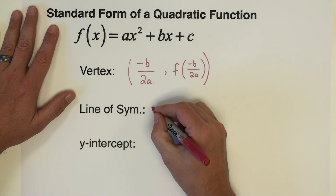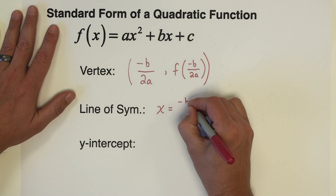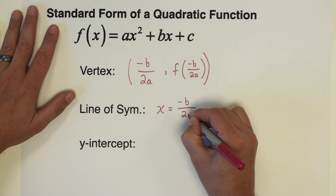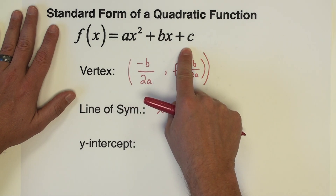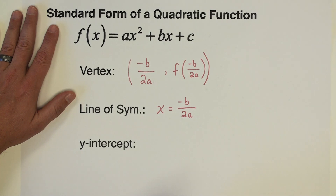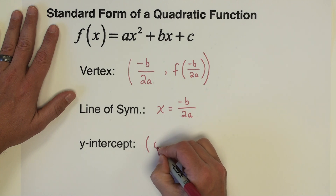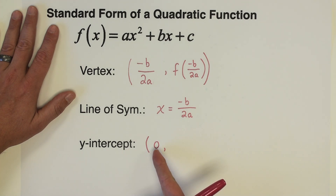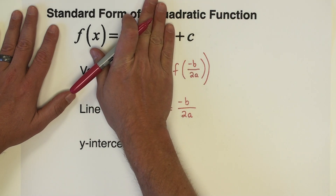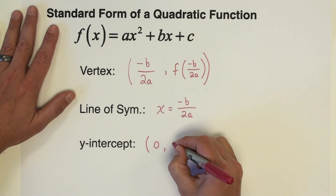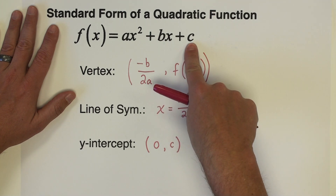Just like in the last video, the line of symmetry goes through the vertex at the x-coordinate, so the line of symmetry is simply x equals negative b divided by 2a. The y-intercept is also very easy to find in this form. The y-intercept is the place where the graph of the parabola crosses the y-axis, which happens when x equals zero. If we put zero in for x, those terms disappear and we're left with just the constant c. So the y-intercept is the point (0, c).